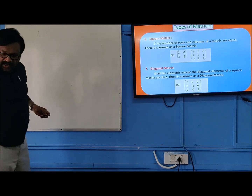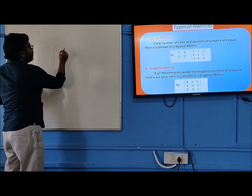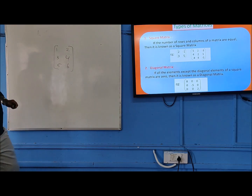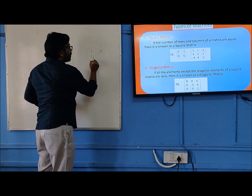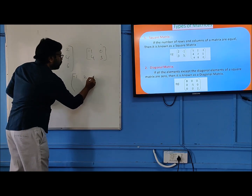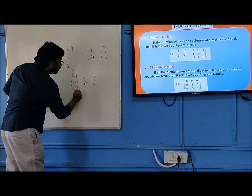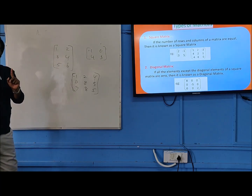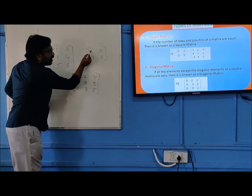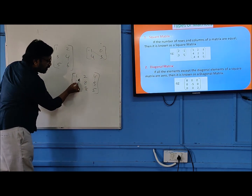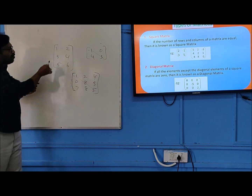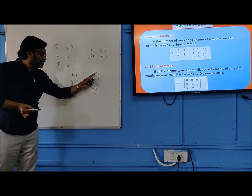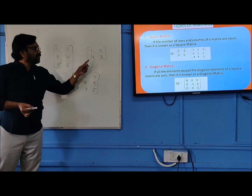Square matrix — you see, if I write a matrix: 1, 2, 3, 4, 5, 6 — for example. It is a square matrix. Another example: minus 1, 2, 4, 0, 8, 7, 3, 7, 8, 5. This is a square matrix. In a square matrix we can complete the diagonal. Here we can complete the diagonal, but here we cannot complete the diagonal — it is not a square. Therefore, in a square matrix we can find the diagonal elements. These elements are known as diagonal elements of this matrix.